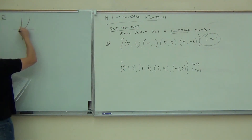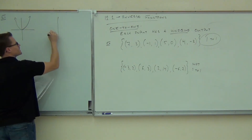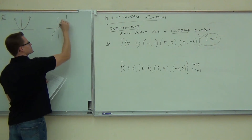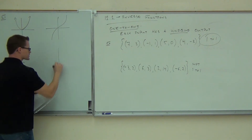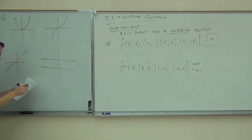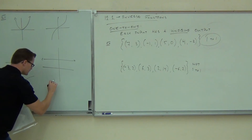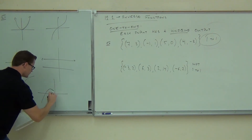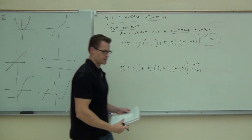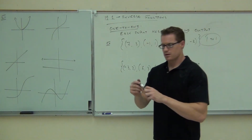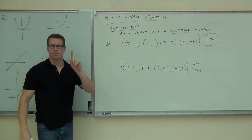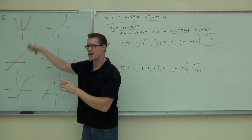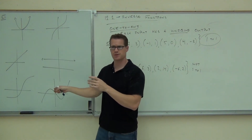We can talk about this using the horizontal line test. You've already had the vertical line test — the vertical line test tells you whether something is a function or not. The horizontal line test will tell you whether something is 1-to-1 or not. All of these graphs are functions; they all pass the vertical line test.